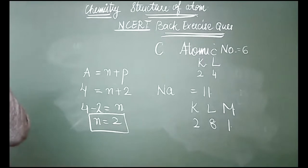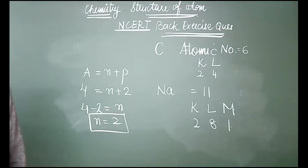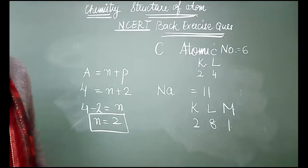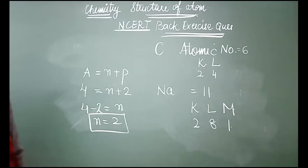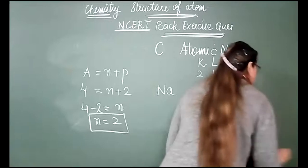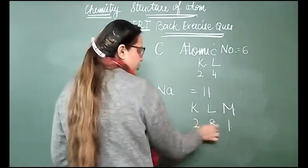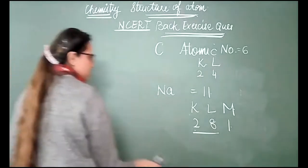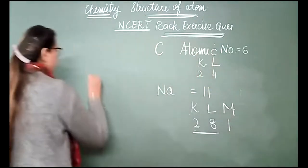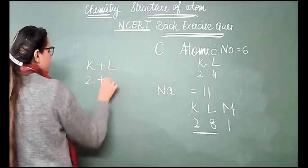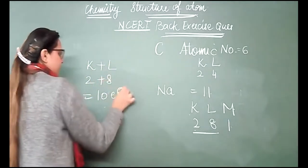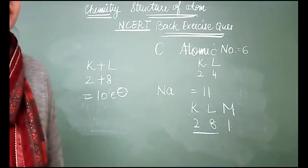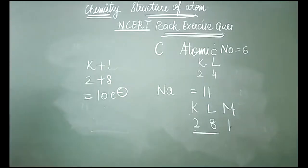If the K and L shells of an atom are both full, what would be the total number of electrons? The answer is 10. The K shell holds a maximum of 2 electrons and the L shell holds a maximum of 8, so 2 plus 8 gives 10 electrons total.